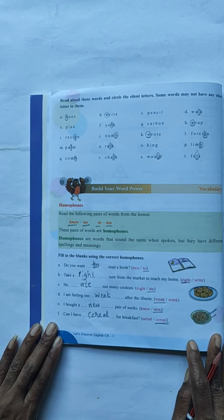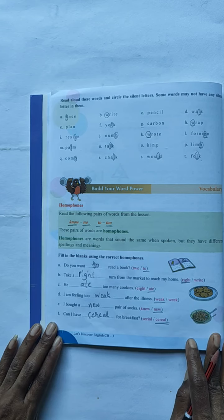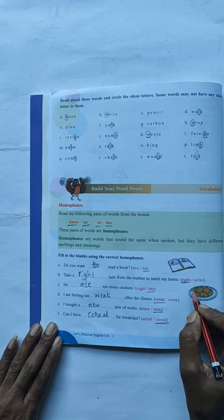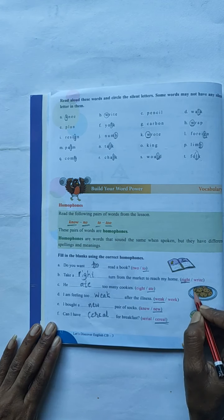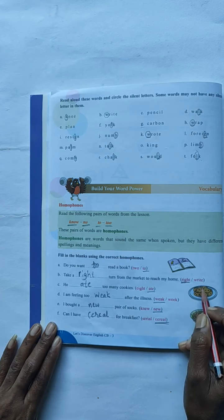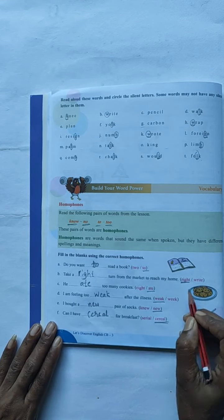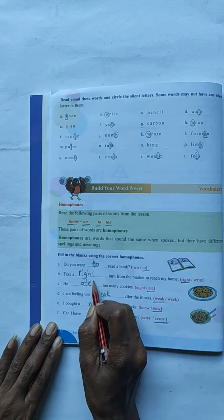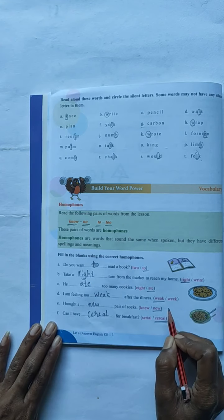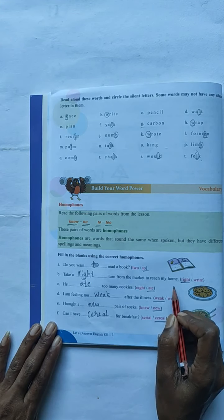The second one is: Take a dash turn from the market to reach my home. They have given here two words in the bracket. R-I-G-H-T, W-R-I-T. So you have to write the right word. R-I-G-H-T you have to write in this place because it will correct to. You get the correct sentence.